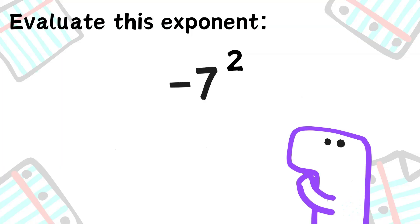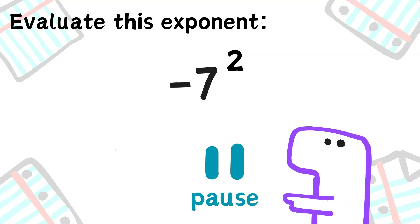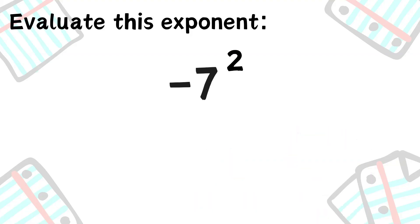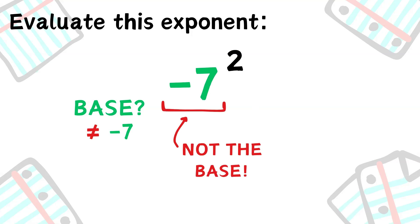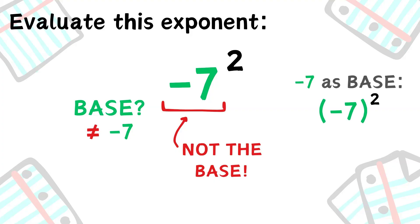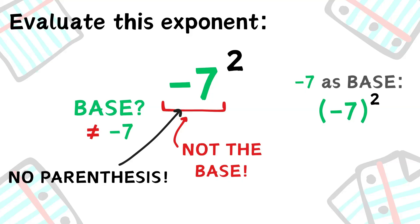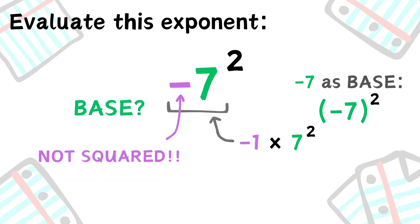Here's another question: what is negative 7 squared? The first question we need to ask is what is the base here? It may look like negative 7 is the base, but this is actually not the base. If negative 7 were the base, we would write negative 7 in parentheses to the power of 2. However, we don't have parentheses here. This means the expression is the same as negative 1 times 7 squared — the negative sign is not being squared.